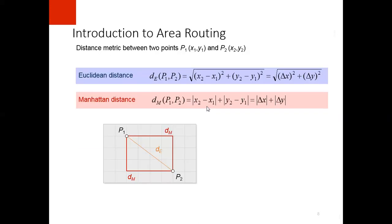Area routing is generally dependent on the distance between two points. First we have the Euclidean distance and second is the Manhattan distance. In this example we can see both the Euclidean distance and the Manhattan distance between two points.